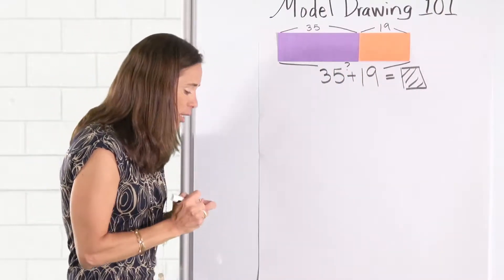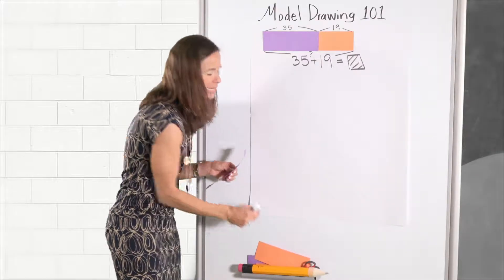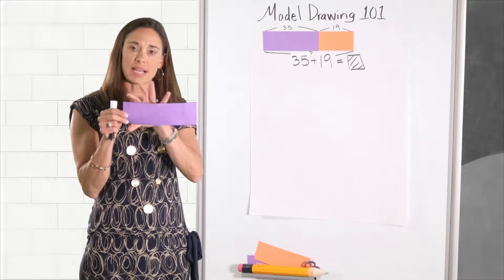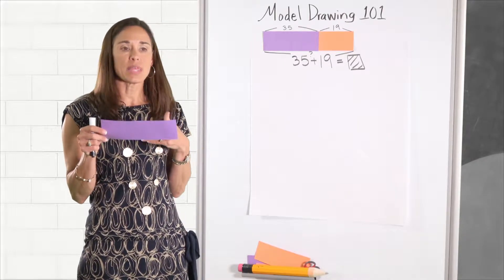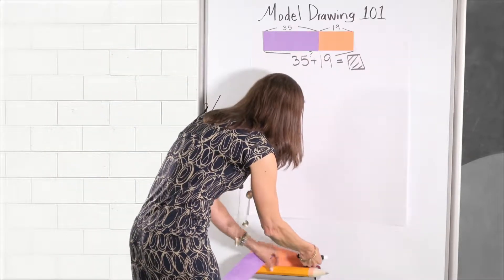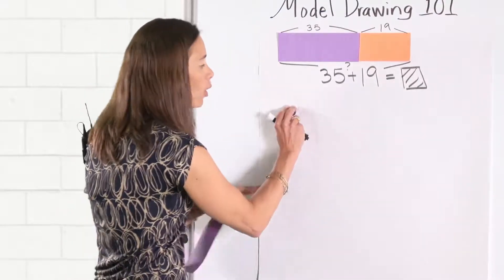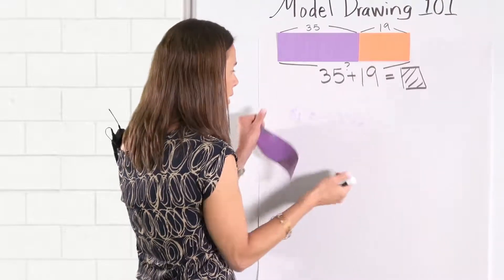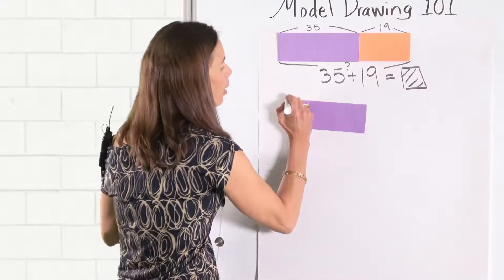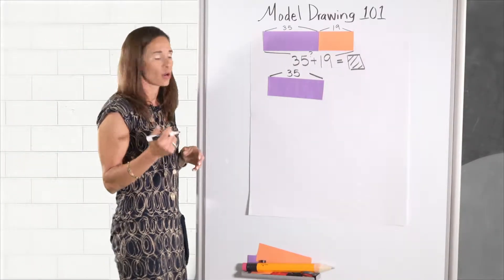Another situation that we could use bar modeling is in a part-whole model. So in this representation we have Spikey has 35 coins. So this bar is representing the whole or the total. We know that 19 of his coins are pennies and the rest are quarters. So in this model we're moving from the idea of action to the part-whole representation. So here we have his 35 coins. And then we know that part of these coins, 35 is the whole, part of these coins are pennies and the rest are quarters.